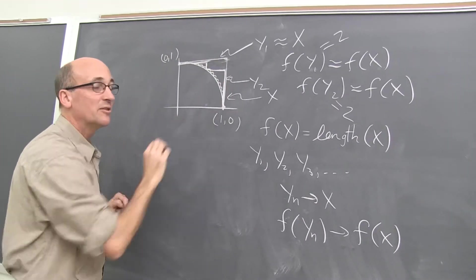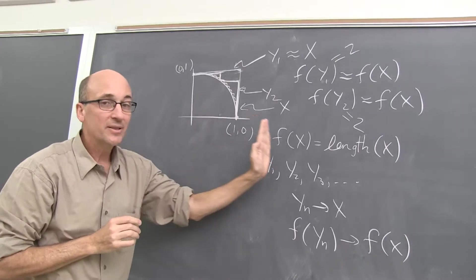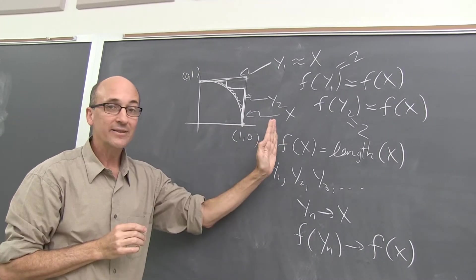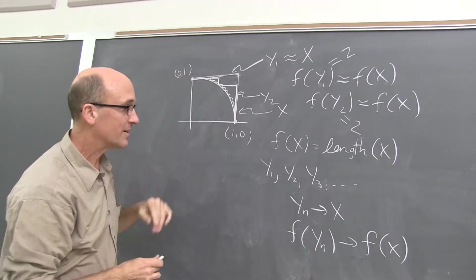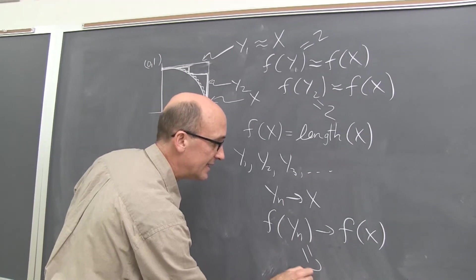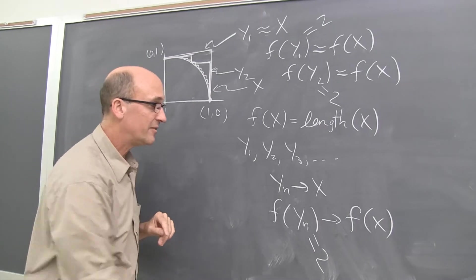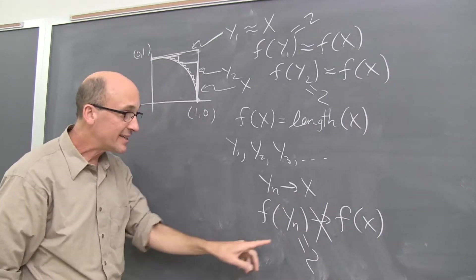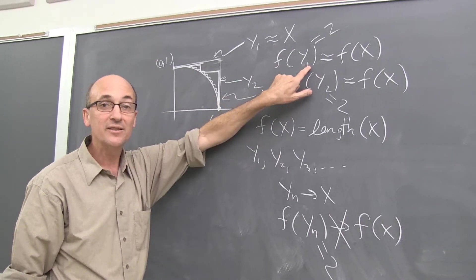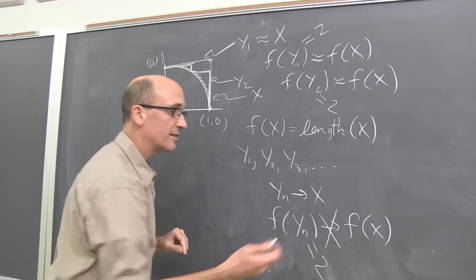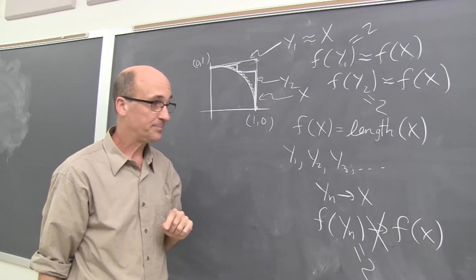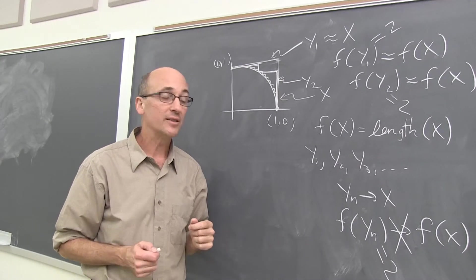And this always happens. No matter how many steps you put in, if you add up all those stair treads, they go one unit horizontally. Add up all those stair risers, they drop one unit vertically. F of Yn is always two. This value is not converging. The error that was present in the first approximation never goes away. We don't get good approximations of f of X. That's an example of what can go wrong.